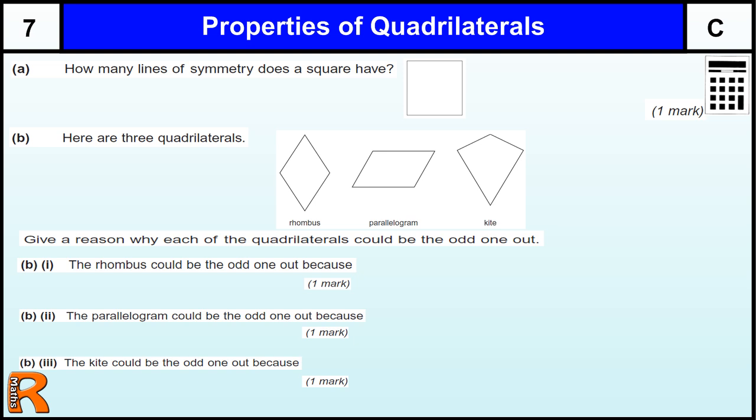Properties of quadrilaterals. How many lines of symmetry does a square have? Well, four, shouldn't need to think about that.